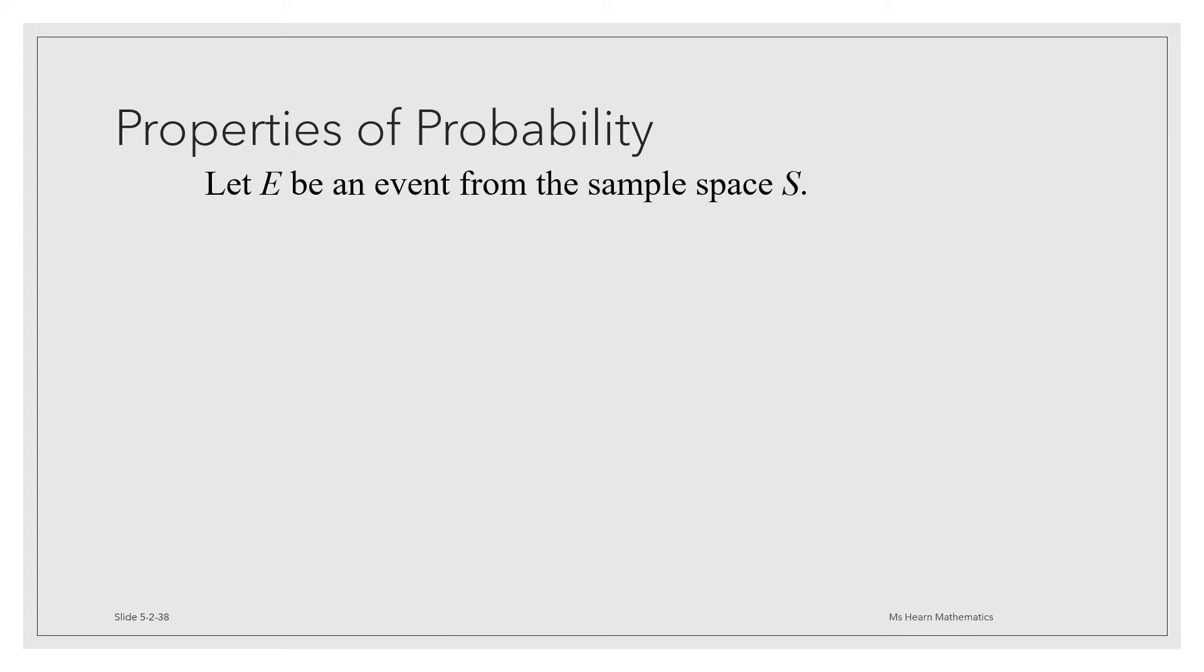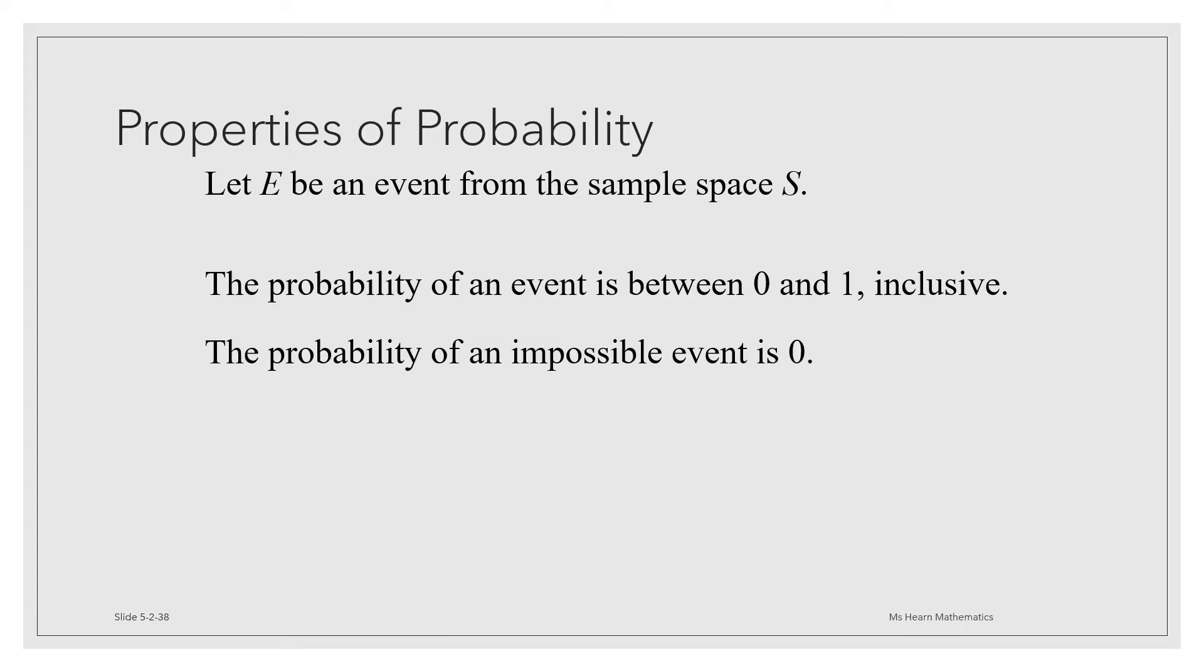If E is an event from a sample space S, then the probability of E ranges between 0 and 1. The probability of an impossible event is 0, and the probability of a guaranteed event is 1, and everything else falls in between. That's why probabilities are fractions and decimals.